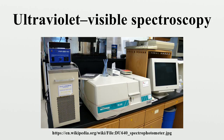While charge transfer complexes also give rise to colors, the colors are often too intense to be used for quantitative measurement. The Beer-Lambert law states that the absorbance of a solution is directly proportional to the concentration of the absorbing species in the solution and the path length. Thus, for a fixed path length, UV-Vis spectroscopy can be used to determine the concentration of the absorber in a solution. It is necessary to know how quickly the absorbance changes with concentration, which can be taken from references or determined from a calibration curve.